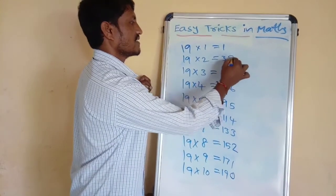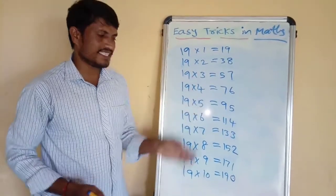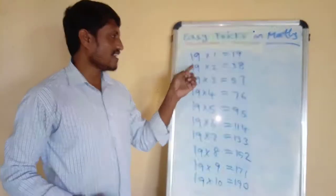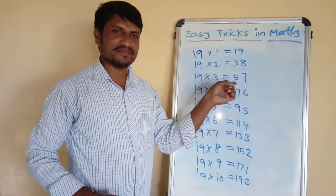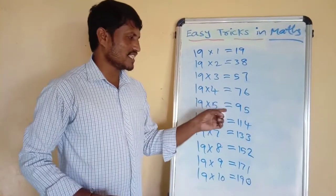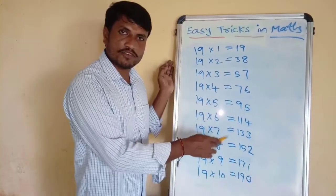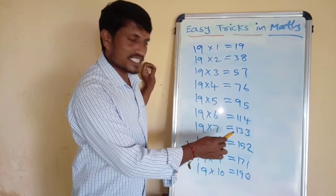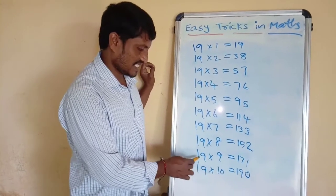7, 8, 9. So the 19 table is: 19 1s are 19, 19 2s are 38, 19 3s are 57, 19 4s are 76, 19 5s are 95, 19 6s are 114, 19 7s are 133, 19 8s are 152, 19 9s are.